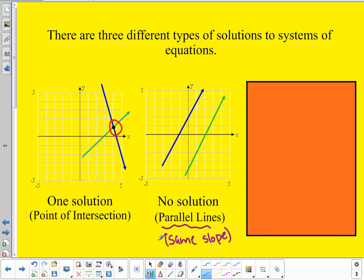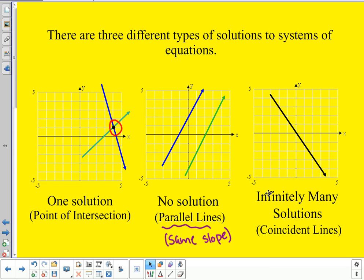That might be a note for you to write down as well, is that no solution systems, or parallel lines I should say, have the same slope. And the last type of solution that we have is infinitely many solutions. And that's what happens when we end up getting coincident lines, or in other words, they end up being the same line. Same slope, same y-intercept. It's kind of like that example 2 that we just looked at up at the top. So three different types. You can have one solution, you can have no solutions, or you can have infinitely many solutions.